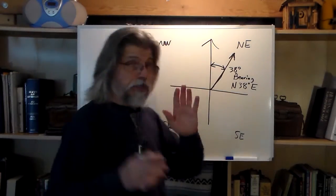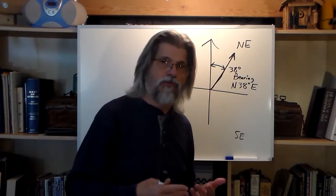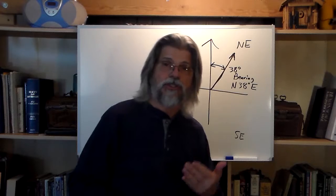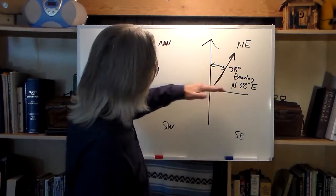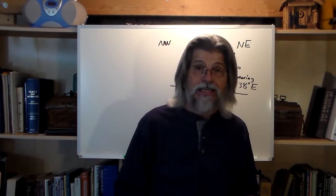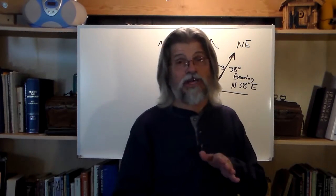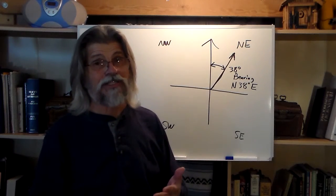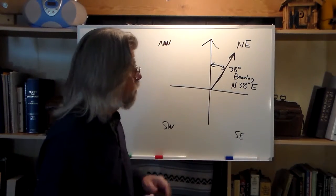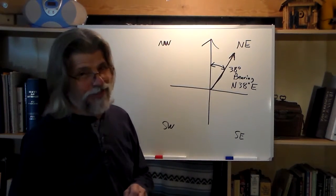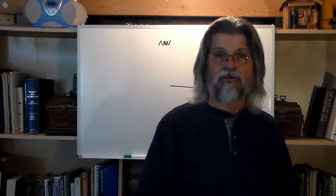Very straightforward. The important thing is, until you're really well versed in this, you've got to avoid the temptation that so many people have: once they get close to the east or west line, they want to relate that angle to the east or west rather than the north or south. That's not the right way to do it — I've seen it done that way on some deeds over the years, but you're supposed to relate it to north or south. Our bearing is north 38 degrees east.